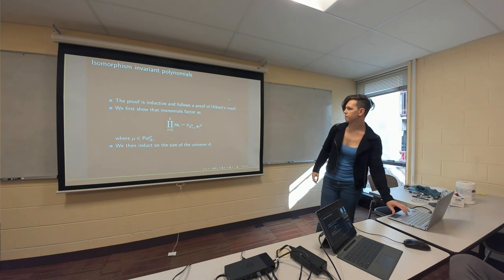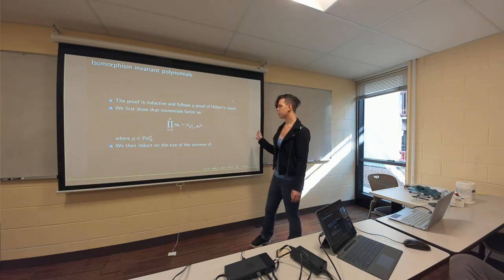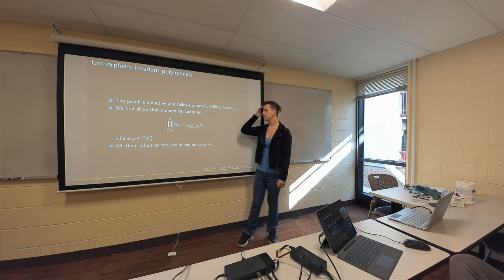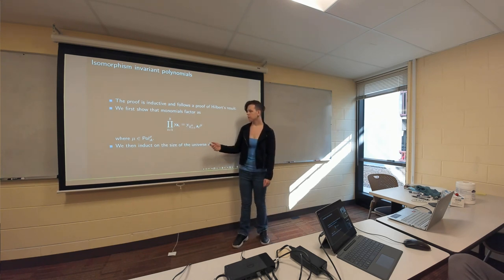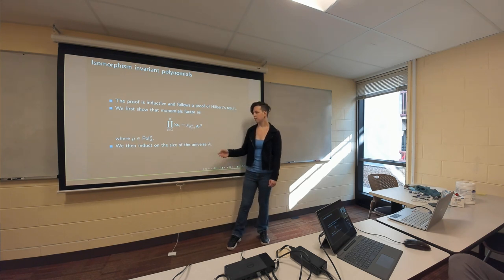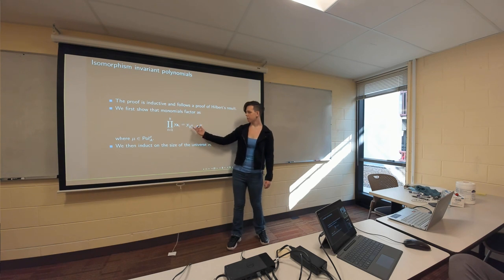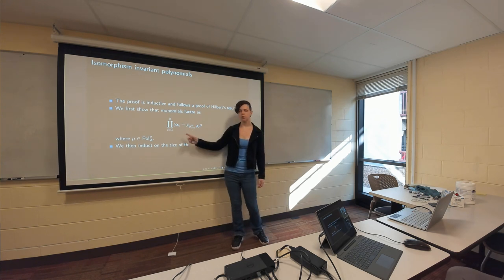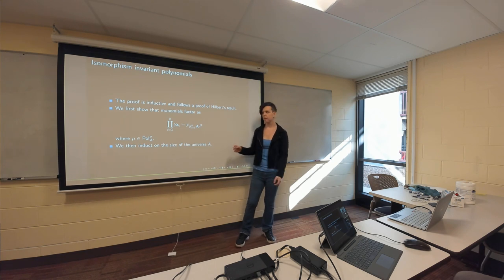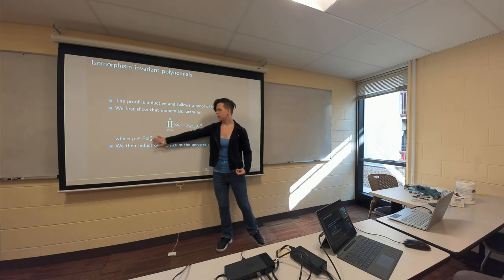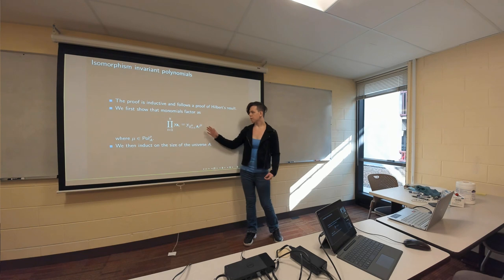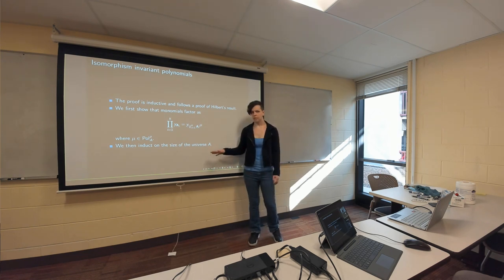The proof is inductive and follows a proof of Hilbert's result — I believe the one in Lang. We first show that products of monomials factor as the monomial of the join of the corresponding structures in the poset of structures on the finite set, times some polynomial in the algebra. Then we induct on the size of the universe A: we suppose the result holds for a set with one fewer element, take A_n to be all structure-constant variables depending on the new element — like adjacency matrix entries involving the new vertex — then zero out all those entries in our symmetric polynomial F to get a symmetric polynomial on the smaller set.